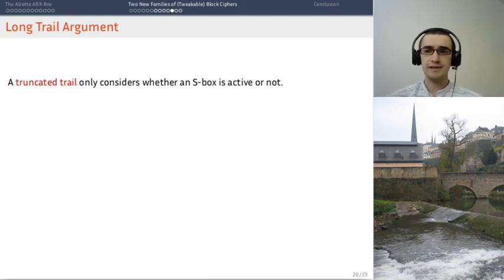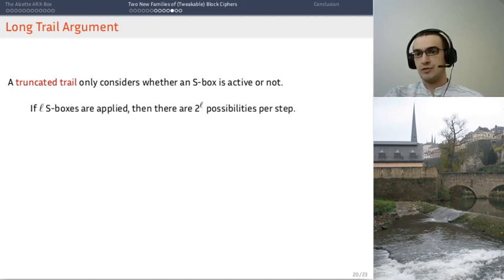A truncated trail is a differential trail where you only care about whether the part of the state is active or not. So, you don't care about the value. You just want to know if it's active or not. So, for each s-box, you want to know if it has a non-zero difference in its input or not. So, if you have l s-boxes, then you have two to the l possibilities per step. Each s-box is active or not. That's two possibilities and you have two to the l.